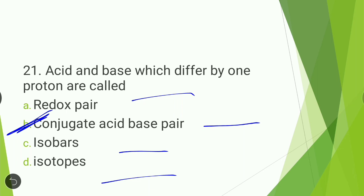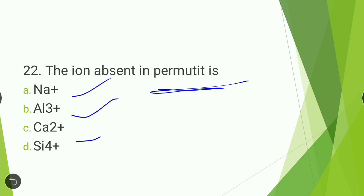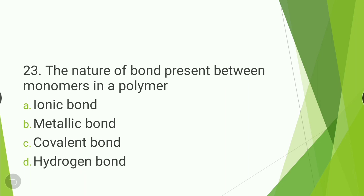Next question: the ion absent in permutit — Na+, Al3+, Ca2+, or Si4+? The answer is Ca2+. The formula of permutit is Na2AlSiO4, so calcium ion is absent in permutit.